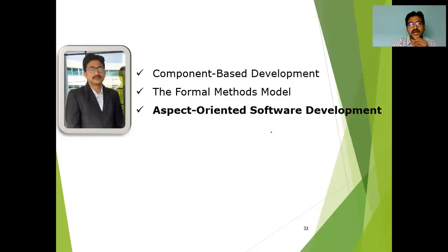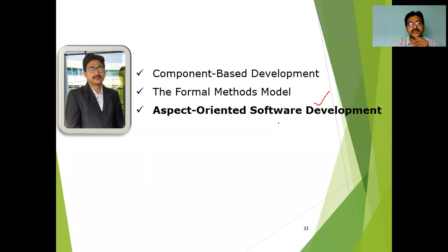Coming to the last model in specialized process models is AOSD, which stands for Aspect Oriented Software Development. Aspect oriented software development — 'aspect' is nothing but specific, specific to a particular thing, a particular way it is going to be oriented, similar to how object oriented works.